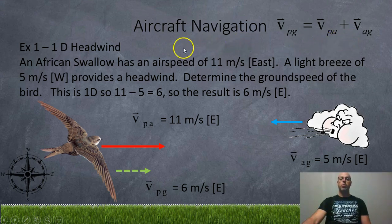Here's a quick easy 1D example, one-dimensional. So we're going to have a headwind. An African swallow has an airspeed of 11 meters per second east, and a light breeze of 5 meters per second west provides a headwind. So the wind is blowing towards the African swallow. Determine the ground speed of the bird. So this is 1D, so it's pretty easy, it's just relative velocity, so 11 subtract 5 is 6. So the resultant velocity is 6 meters per second east. So this bird, although it is trying to fly at 11 meters per second, it's being blown back at 5, so it only results that it's moving at 6 meters per second compared to the ground.